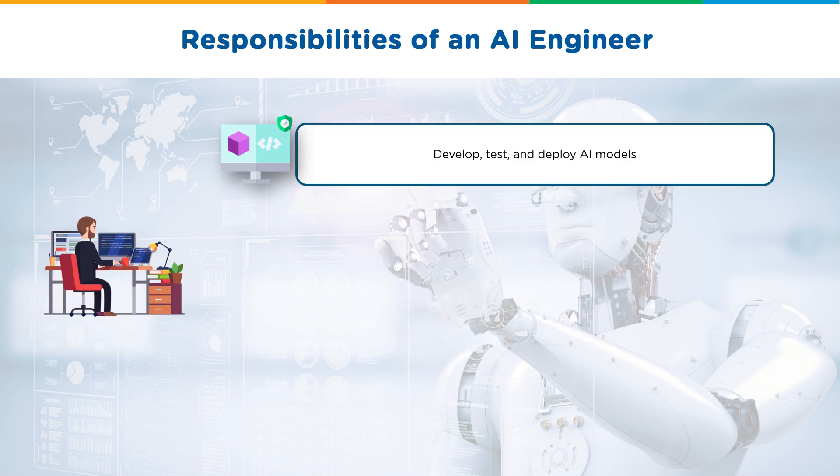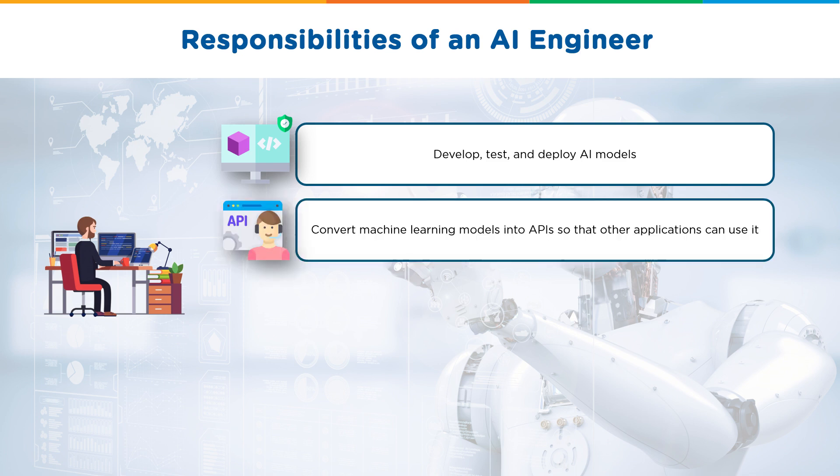Now let's talk about the responsibilities of an AI engineer. Firstly, they need to develop, test, and deploy AI models. This can be done through a number of programming algorithms like random forest, logistic regression, linear regression, and so on. They also need to be able to convert machine learning models into APIs, or application program interfaces, so that other applications can use them.